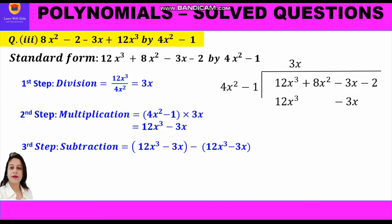We subtract by writing both in brackets with a minus sign in between. Opening the brackets and changing signs: 12x³ cancels with minus 12x³, and minus 3x cancels with plus 3x, leaving zero.